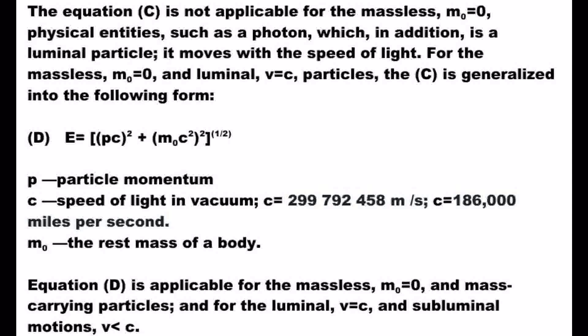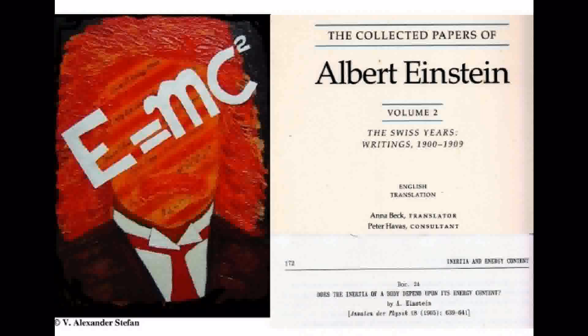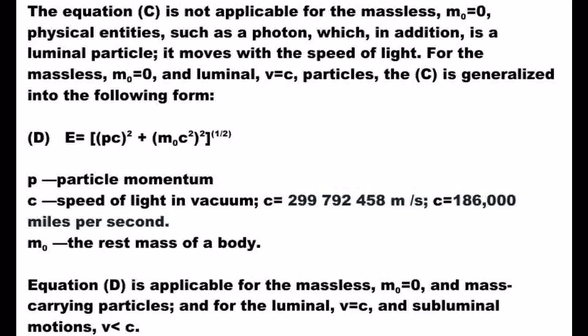Equation C is not applicable for massless particles — M₀ equals 0 — physical entities such as a photon, which in addition is a luminal particle moving with the speed of light. For the massless (M₀ = 0) and luminal (V = C) particles, equation C is generalized into a following form: equation D, which is applicable for both massless (M₀ = 0) and mass-carrying particles, and for both luminal (V = C) and subluminal motions.